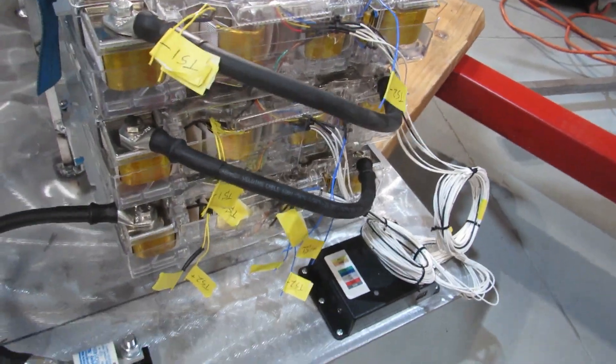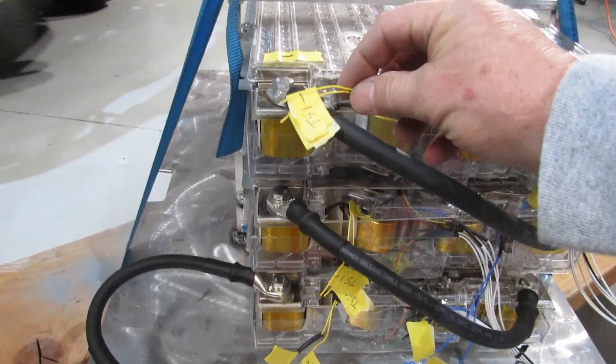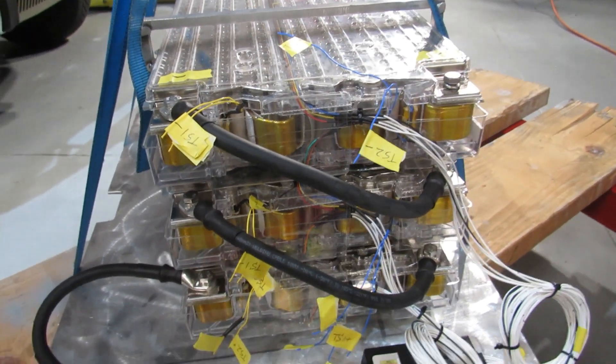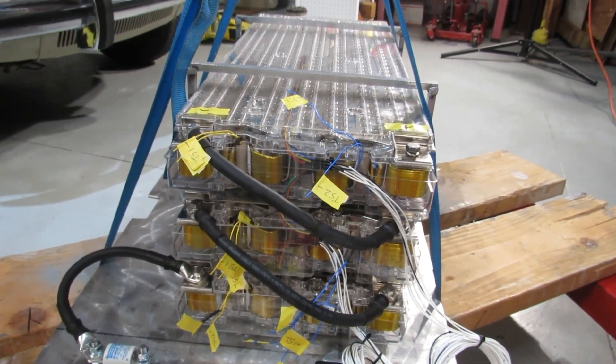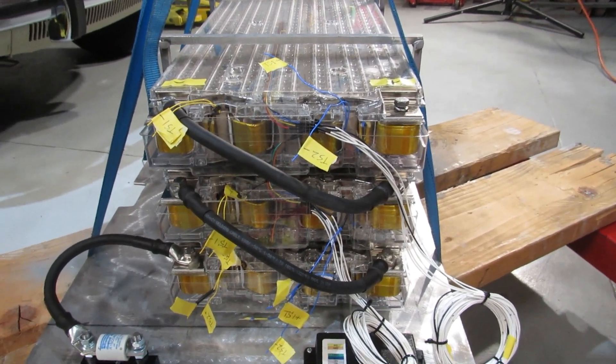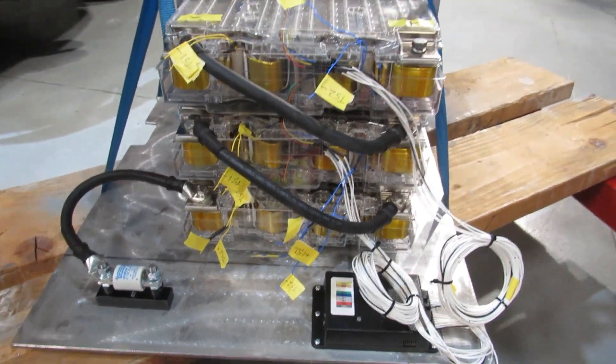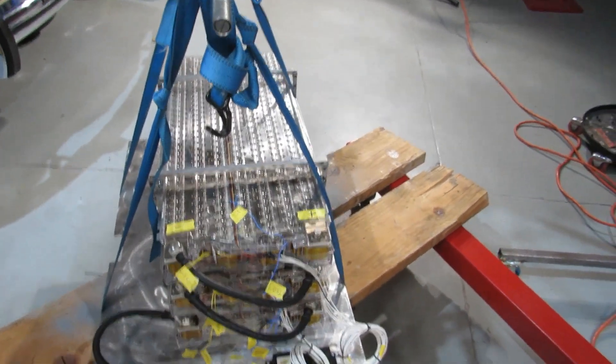I still don't have an answer from EV West even though it's been three weeks with these yellow wires and the blue wires on each of the batteries. Basically there are temperature sensors and they have not been able to give me any answers yet as to where in this harness it should be connected. Kind of frustrated with that, but we'll figure it out.